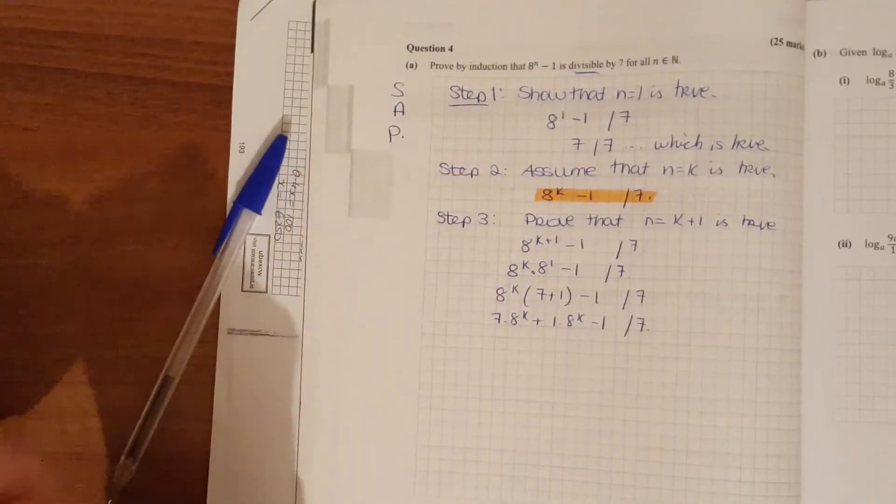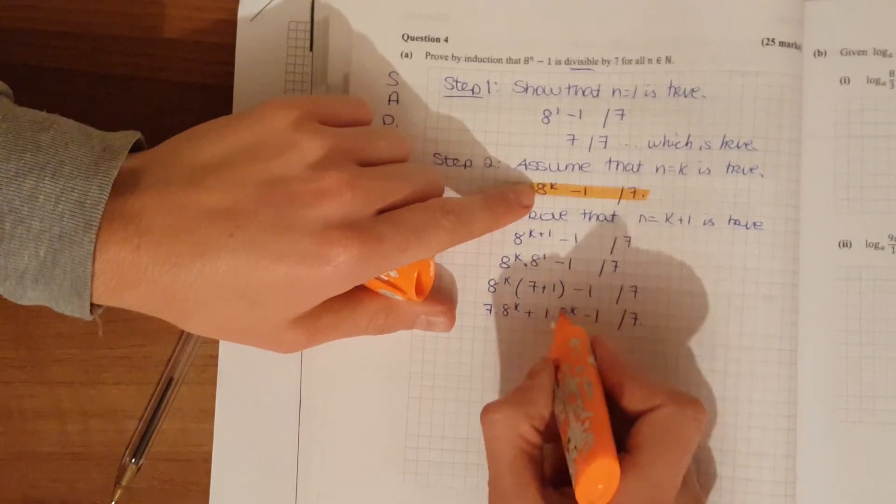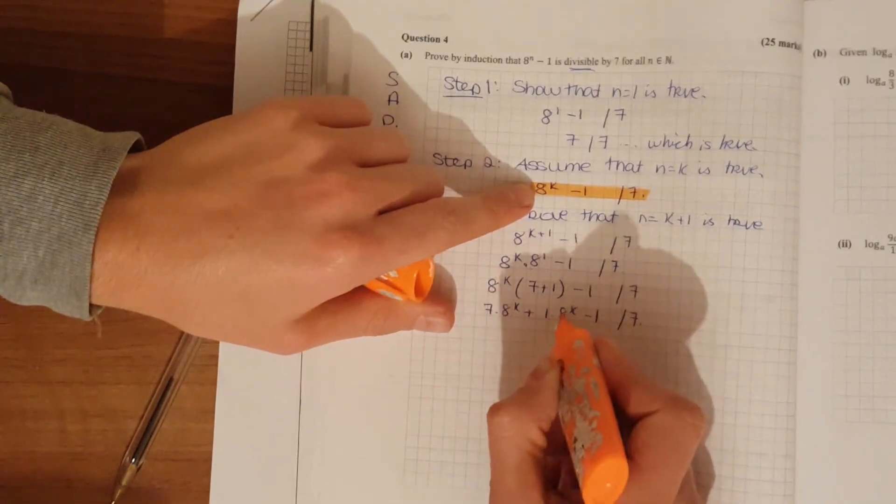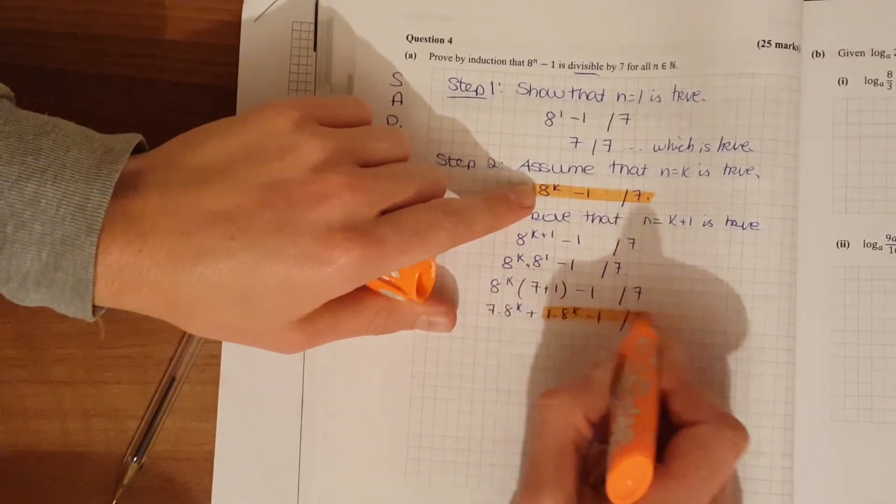And now we have our assumption here, look. 8 to the k minus 1 divisible by 7. Now you don't need to highlight it in your exam. Just to show you here.